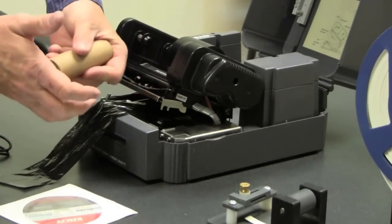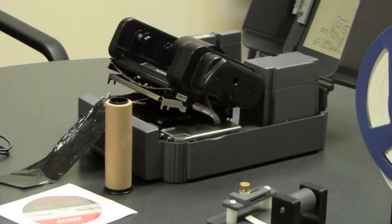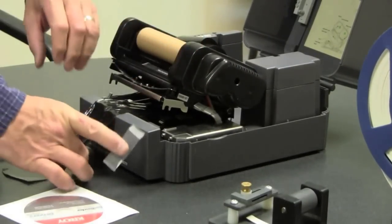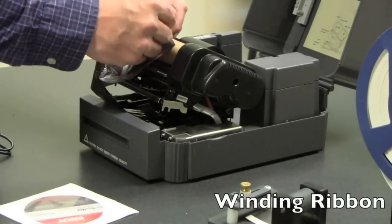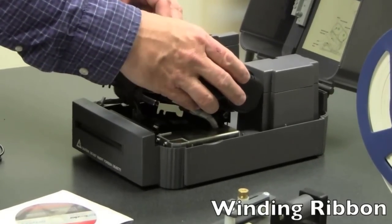Put the cardboard stock on the other spindle. Make sure the flange is on the right. Then install that in the printer on the front spindles. Tape the front of the ribbon. Then roll the ribbon in a clockwise fashion. Take up the slack.